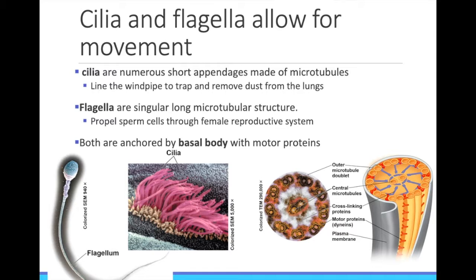Flagella are used for propelling a cell forward. Human sperm cells, like the one pictured on the far left, have one flagellum, and it whips to swim so that it propels the sperm toward an egg.